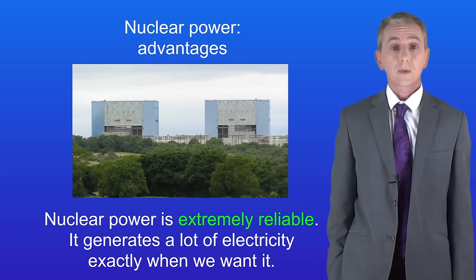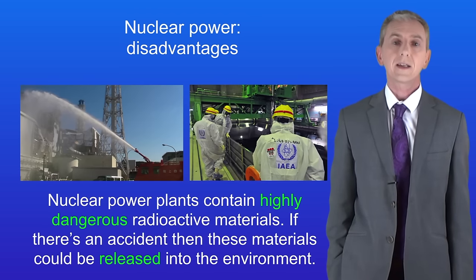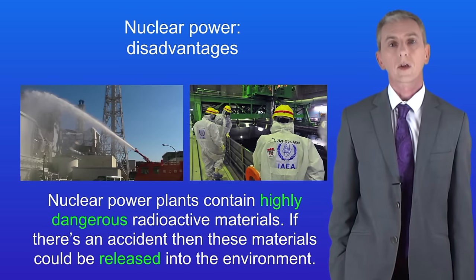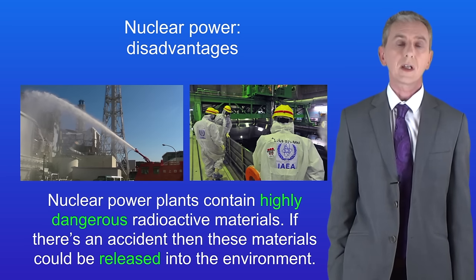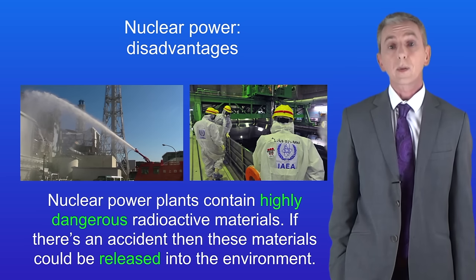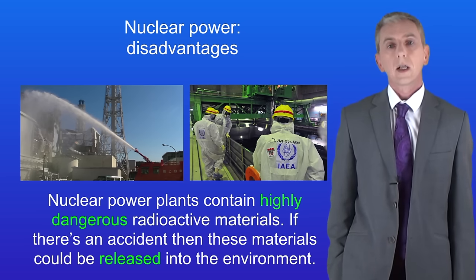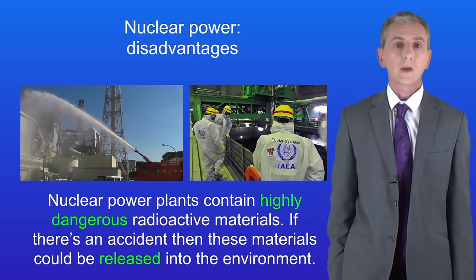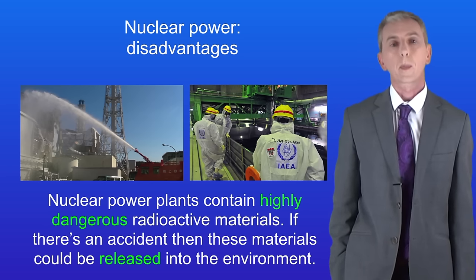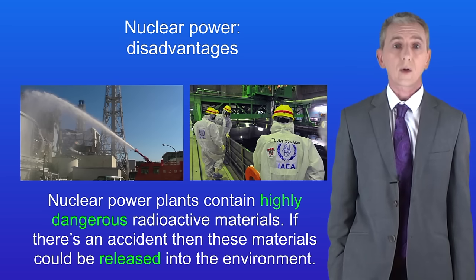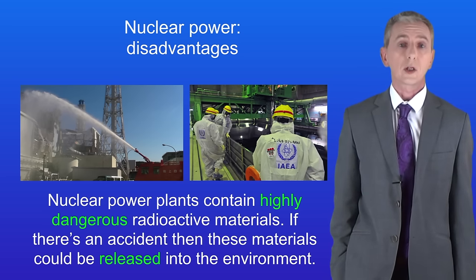Now there are some disadvantages to nuclear power. The first is that nuclear power plants contain highly dangerous radioactive materials, meaning that if there's an accident these materials can be released into the environment — potentially disastrous. I'm showing you here a Japanese nuclear power plant. In 2011 a tsunami flooded the power plant and caused the release of radioactive material. Over 150,000 people who lived nearby had to be evacuated and the cleanup will continue for many years.